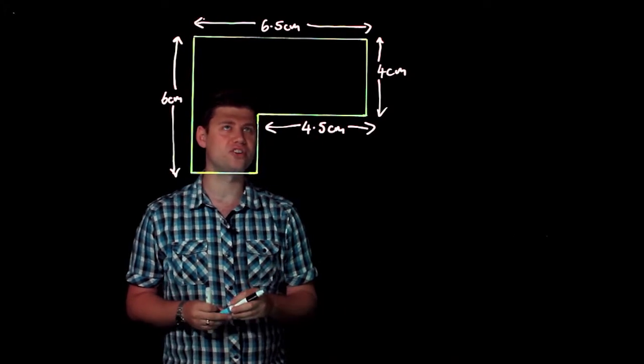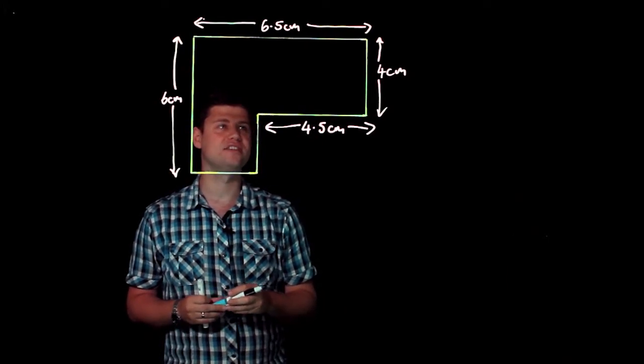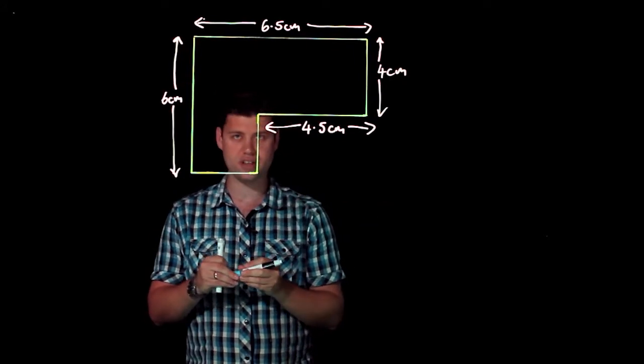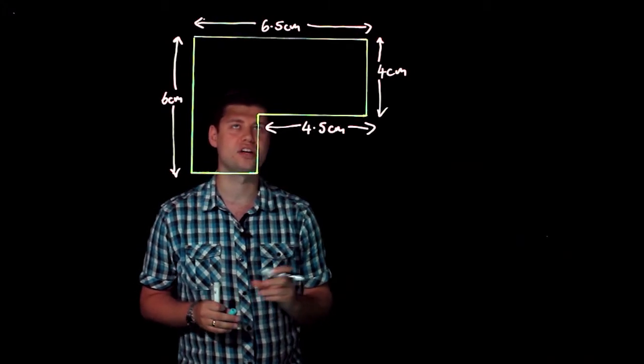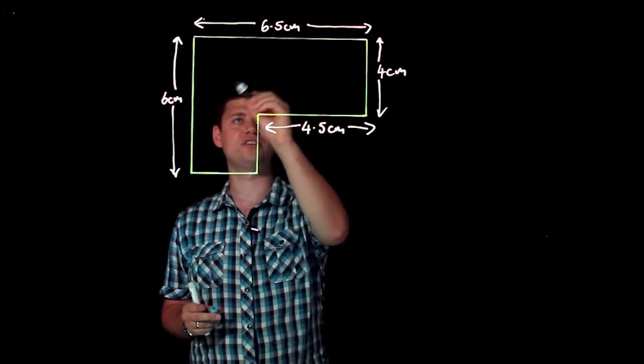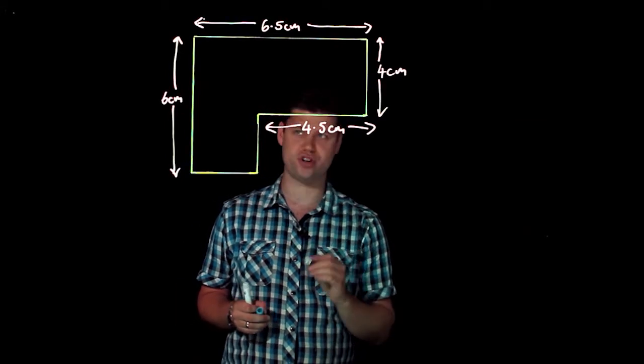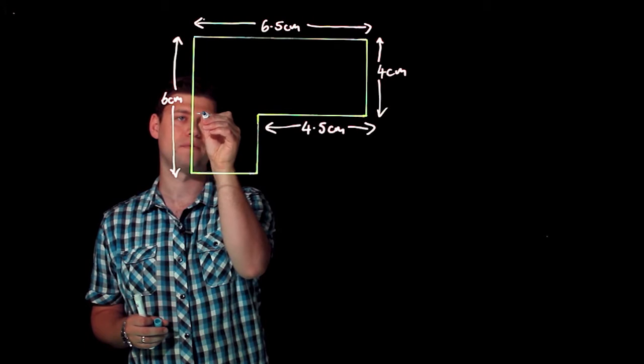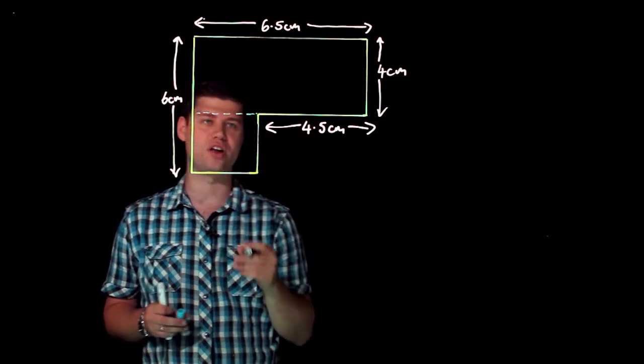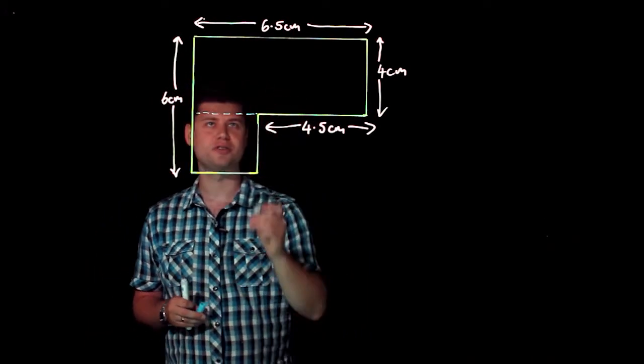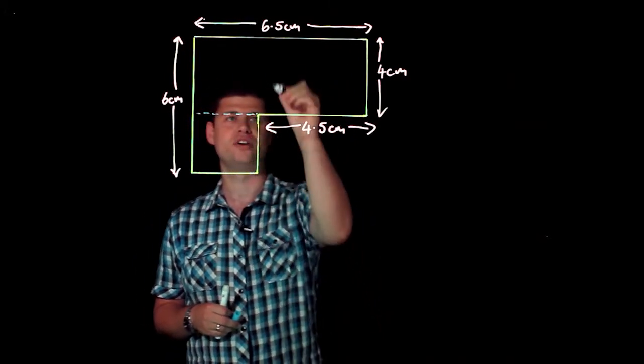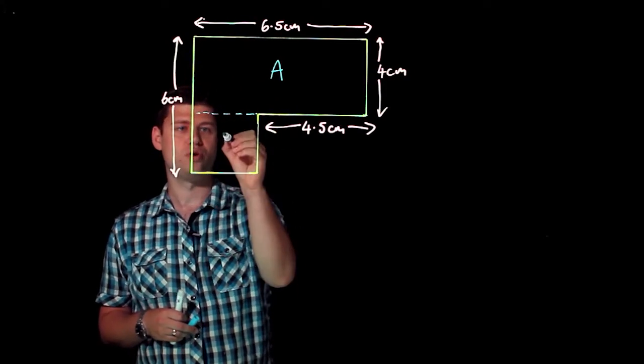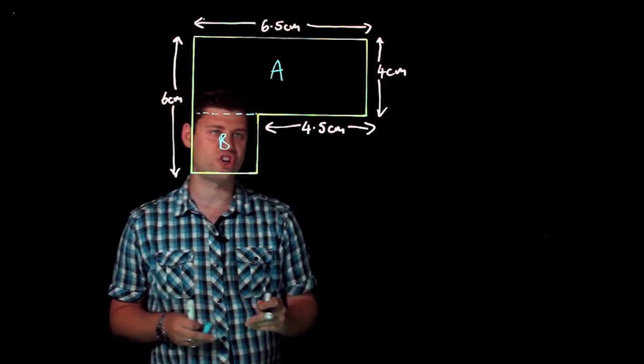So the first thing I need to decide when I look at this shape is how I'm going to go about working it out. Now the first thing that seems obvious to me is that it would be helpful to split this shape up into two different shapes. So if I do a little dotted line across here like that, then that leaves me with this shape here which I'm going to call shape A and this shape here which I'm going to call shape B.